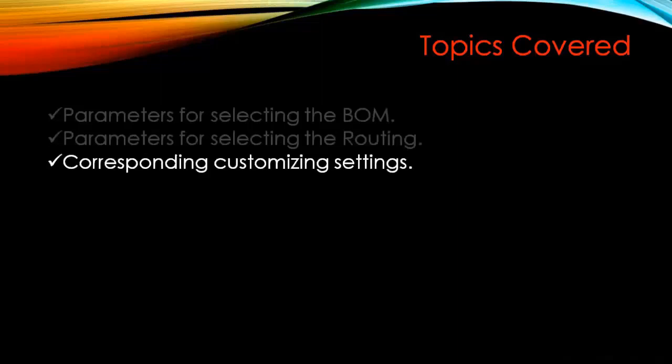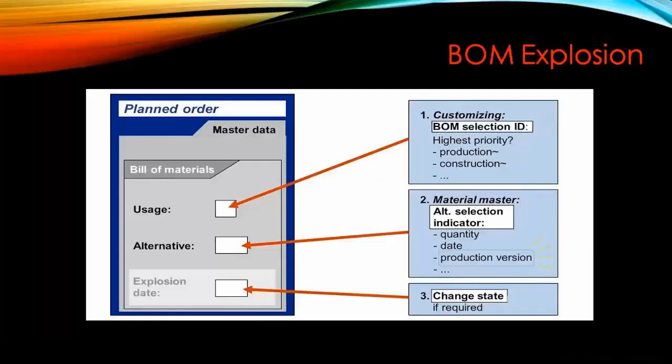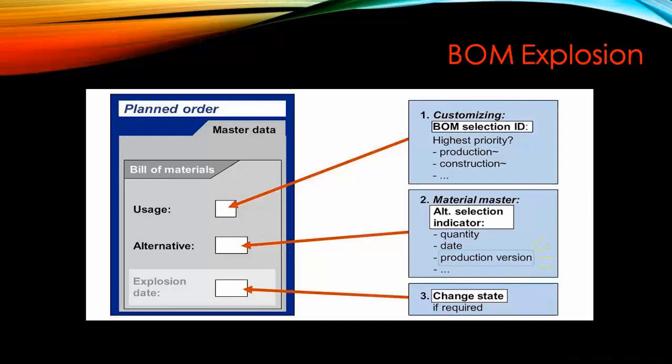The topics we're going to cover are: parameters for selecting the BOM, parameters for selecting the routing, and the corresponding customizing settings. First we'll start with BOM explosion. In previous topics we learned how to create the bill of material, how to create multi-level BOM, different BOMs for the same product. Today we're going to learn about what are the priorities and how does the system know which BOM to select and from which alternative.